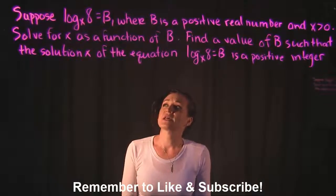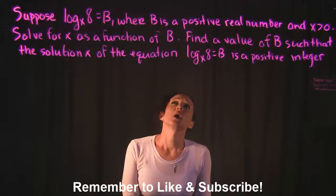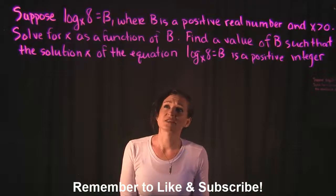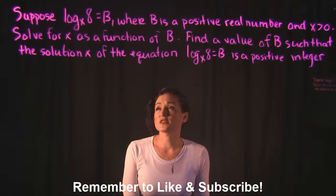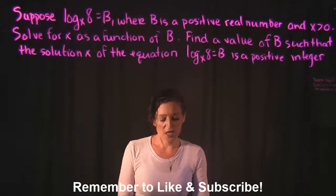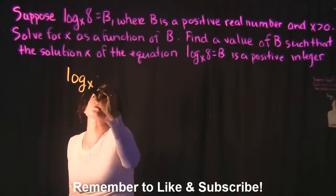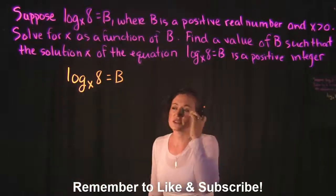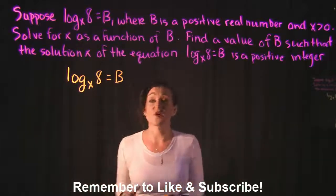For the following problem, it says suppose log base x of 8 is equal to b, where b is a positive real number and x is greater than 0. Solve for x as a function of b, and find a value of b such that the solution x of the equation log base x of 8 equals b is a positive integer. Essentially, they want us to take log base x of 8 equals b and solve for x first.